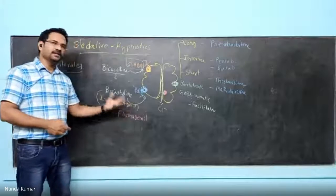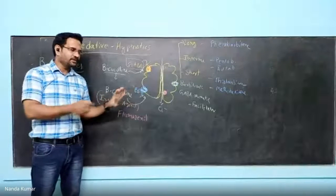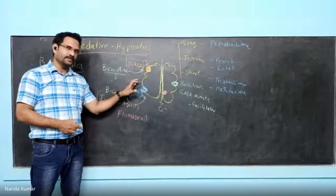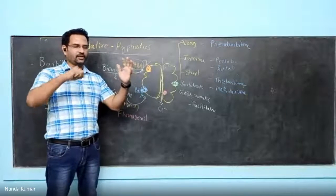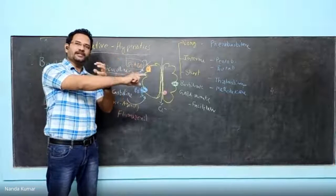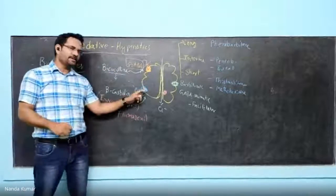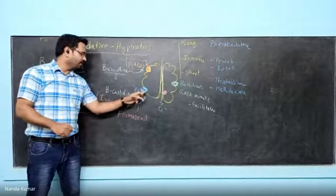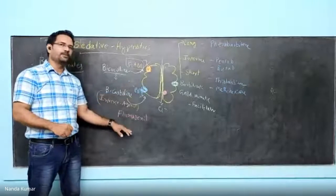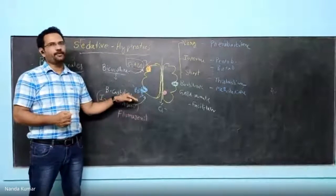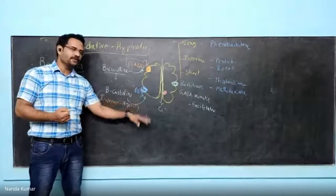Flumazenil is an antagonist at the benzodiazepine receptor. Benzodiazepine binds there and shows some activity, whereas flumazenil also binds to that receptor but blocks it. An antagonist has two properties: it has affinity and goes and binds to the receptor, but no intrinsic activity. So literally it blocks that receptor. When flumazenil is present, the receptor is blocked, so benzodiazepine cannot bind. Beta-carbolines also bind to the same receptor, and that is also inhibited. Flumazenil is an antidote for benzodiazepine poisoning — if someone takes too much benzodiazepine, flumazenil is administered to block the receptor.